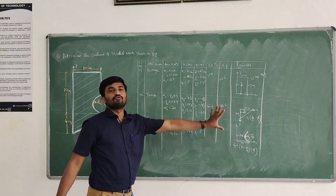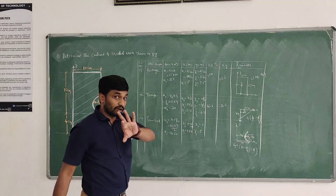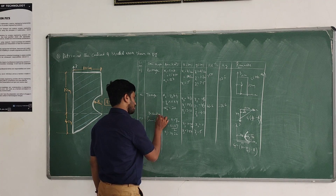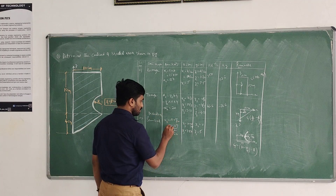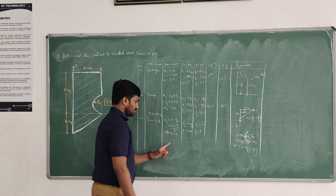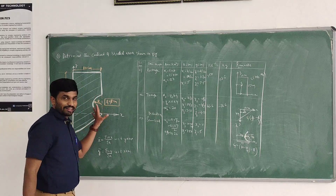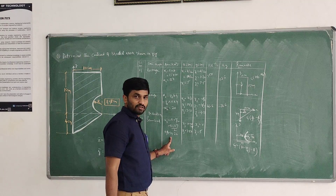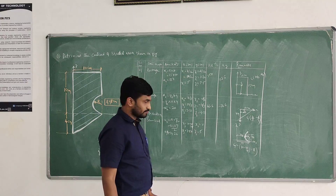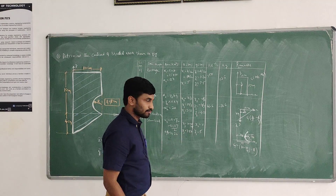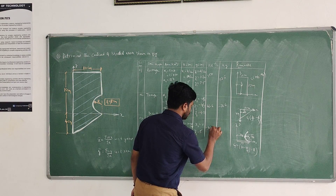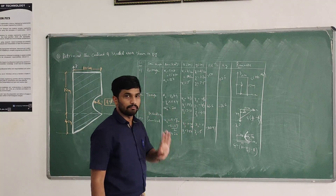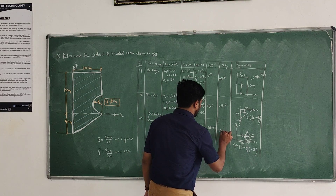Important: this is not a shaded area — it is a cut-out — so we have to deduct it. Therefore the area A3 is taken as minus 39.26 cm². Consequently, A3·X3 = −39.26 × 7.87 = −308.97, and A3·Y3 = −39.26 × 5 = −196.3.